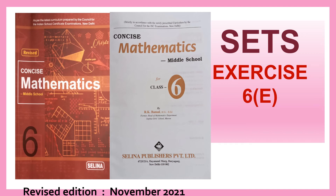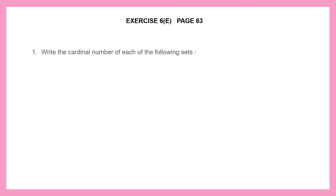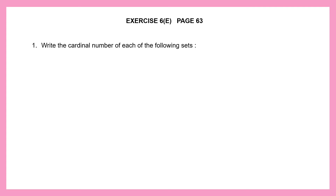Hello students. Let's do exercise 6E today in the chapter Sets. This is found on page number 63. This exercise is all about cardinality. The number of elements in a set is called its cardinal number. So let's start.